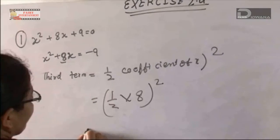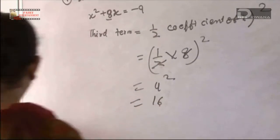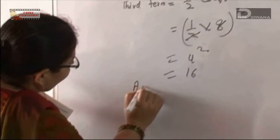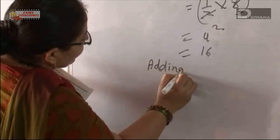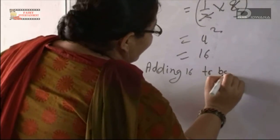Half of 8 is 4, so 4² = 16. So we're adding 16 to both sides.